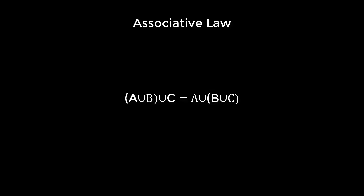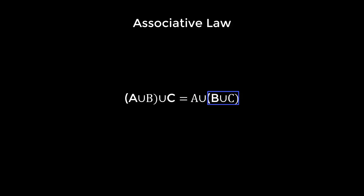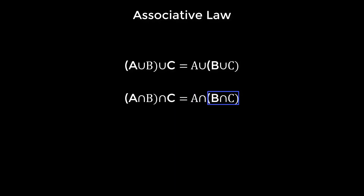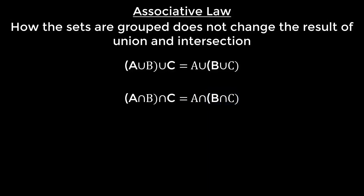Now we are going to talk about the associative law. The associative law says that if we take A union B and then perform another union with C, it will be exactly the same as doing the union operation between A and B union C. For the intersection operation, if we take A intersection B and then perform another intersection with C, it will be exactly the same as doing the intersection operation between A and B intersection C. That means how the sets are grouped does not change the result of union and intersection.